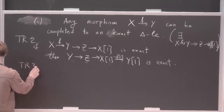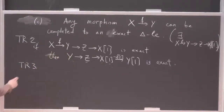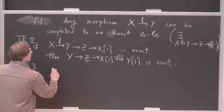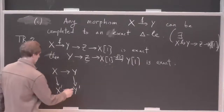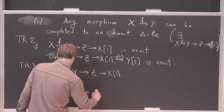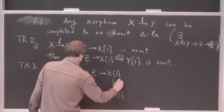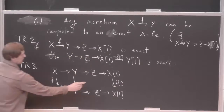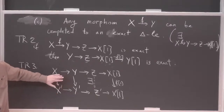The next axiom is probably the one used most often. It says that if you have a commutative square and the rows are extended to exact triangles, then there exists a middle arrow so that it becomes a morphism of triangles. In words: any commutative square extends to a morphism of exact triangles.